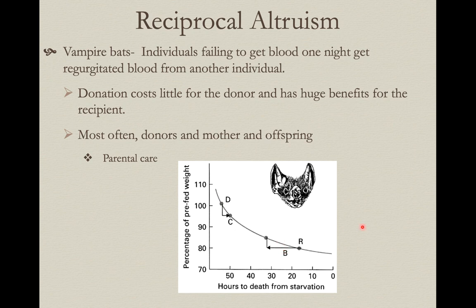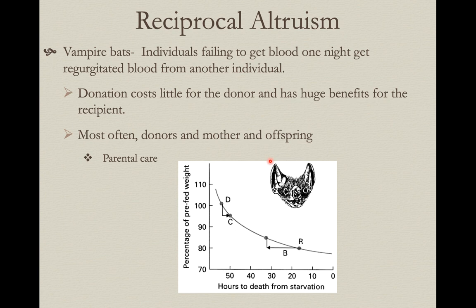The next night the tables may be turned — Bob finds a blood meal and Jim doesn't. As long as Jim reminds Bob: 'I was the one who gave you some blood yesterday — return the favor,' this stable situation means they're both going to benefit in the long run from reciprocal altruism. In some cases this involves mothers and offspring or close relatives — in those circumstances kin selection or simple parental care is operating — but when it involves unrelated individuals, that's when it becomes an example of reciprocal altruism.